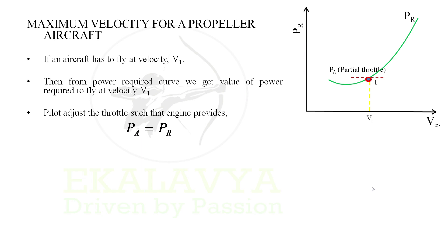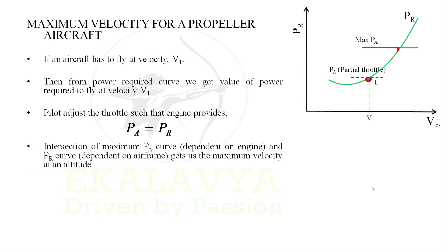The dashed line in the figure illustrates partial throttle operation. In a similar manner, for identifying maximum velocity we need to consider the maximum available power. The intersection of the maximum power curve — dependent on the engine — and the power required curve — dependent on the airframe — gives us the maximum velocity at a given altitude.